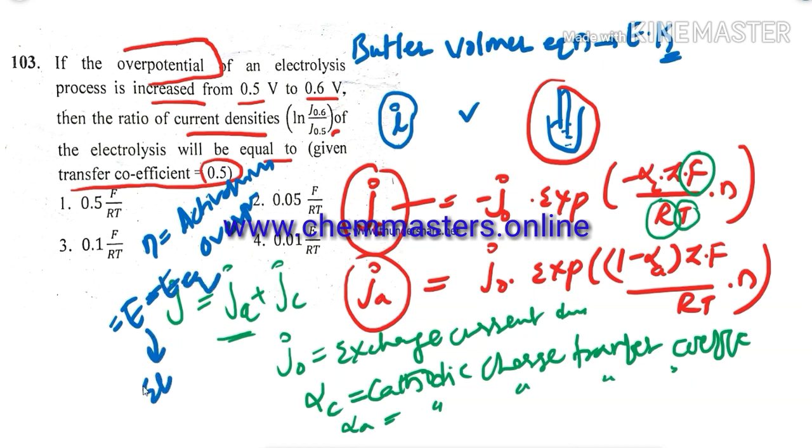Here E indicating that electrode potential, just write down electrode potential. And E equilibrium is equilibrium potential. Just get all the information about each and every term related to Butler-Volmer equation here. Now just by just using these equations we can find an answer to the problem.